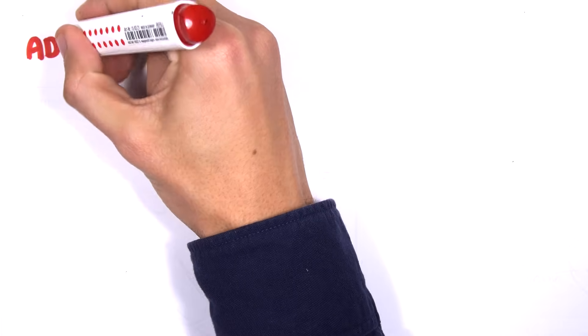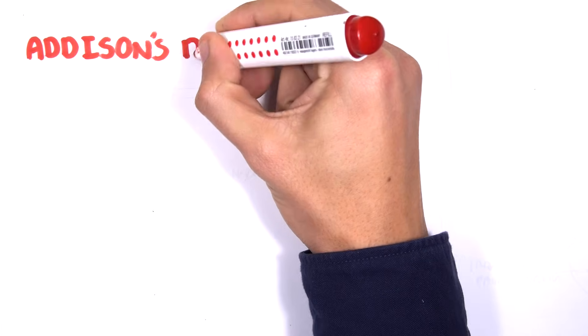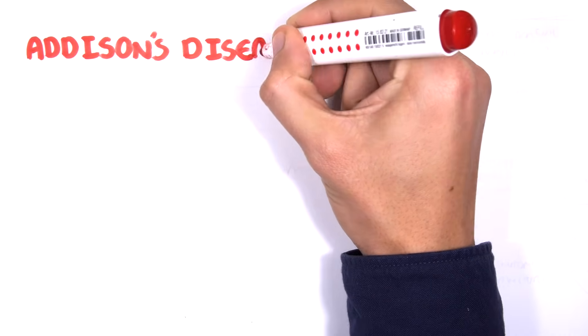Hello, in this video we're going to talk about Addison's disease. When you think of Addison's disease, just think of it as being opposite to Cushing's disease.